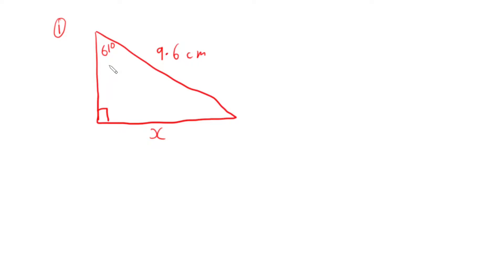Now, the first step in this is to label our triangle. We label our triangle with three sides: hypotenuse, opposite, and adjacent. The hypotenuse is the long, slopey side of the right-angled triangle — the one that's opposite the right angle. It's always the hypotenuse. So I'm going to label this side hypotenuse.